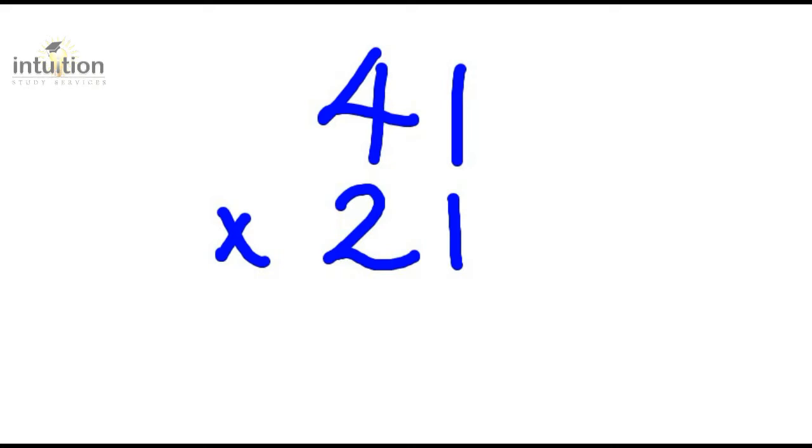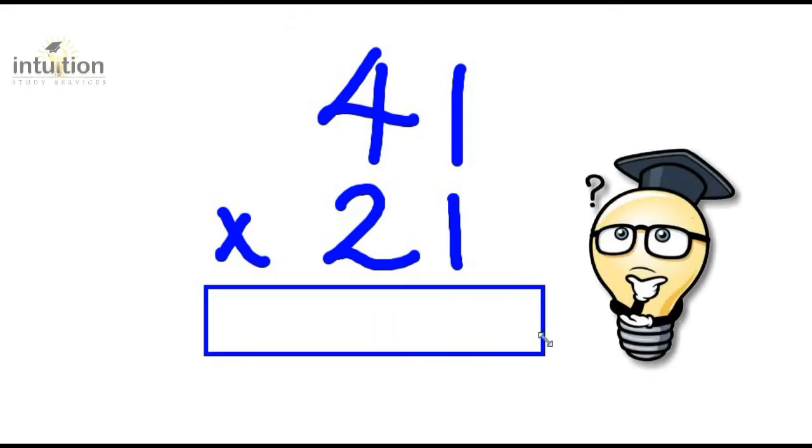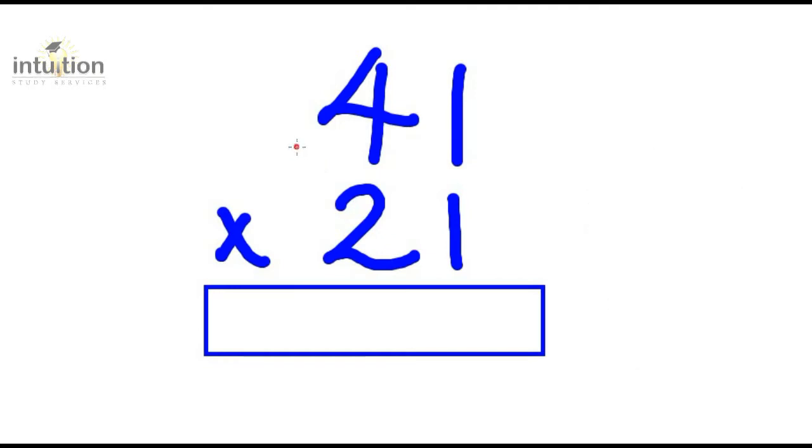Okay, so let's see how quickly you can work out 41 times 21. I'll give you around five to seven seconds to work that out. Give it a go. Okay, time's up. Now, if you got the answer as 861, fantastic. But if you felt that you ran out of time, not to worry. I'm going to show you the quickest way of getting that using this method.